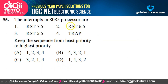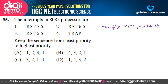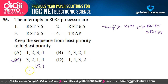Question 55: 8085 processor interrupts from least priority to highest priority — RST 5.5, RST 6.5, RST 7.5, TRAP. TRAP has the highest priority. Arranging from least to highest: RST 5.5 (3rd), RST 6.5, RST 7.5, then TRAP — option C is correct.